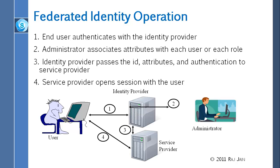Once those two pieces of information are there and the person has been authenticated, wherever you want to get the service, the identity provider notifies the service provider that the user has been authenticated, is authorized to do certain things, and his role is manager. Then, just like in Kerberos, you are given the service according to those instructions. The key difference is that the service provider and identity provider are two different companies — the technical term for that is security domain. They don't share everything, only certain information for certain people.